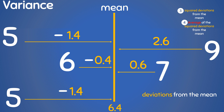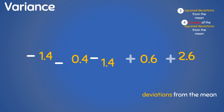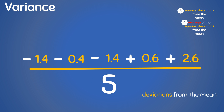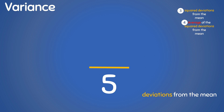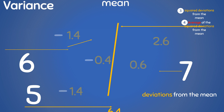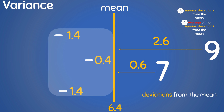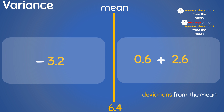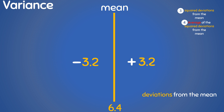But there's a big problem — we have some negative deviations from the mean. And there's an even bigger problem: if we decide to find the average of all these values to get a single value for variance, when we add all these deviations together, we get zero. Because the deviations on one side of the mean will always cancel out with those on the other side, when you add all the deviations from the mean together, you will always get zero.